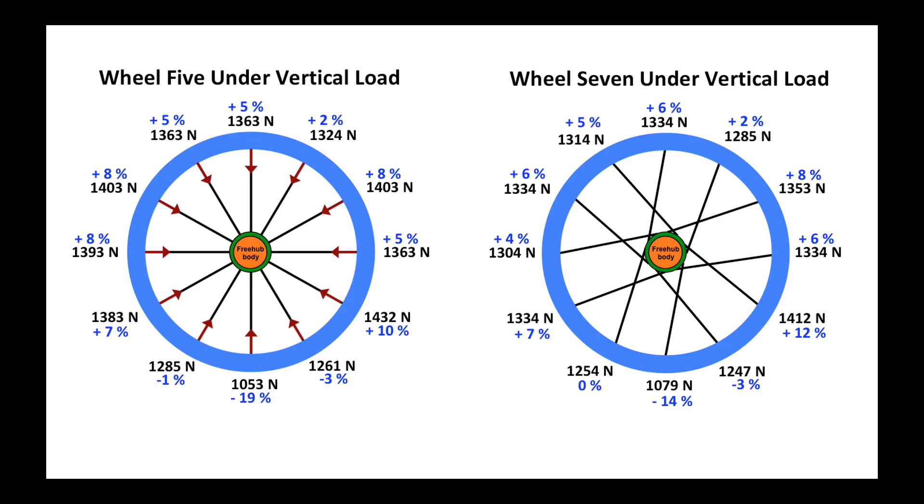Let's compare these two wheels. They are identical in terms of their components. The only difference being that the wheel on the left is radially laced, and the one on the right has a two cross. And we see a small reduction in the percentage loss of tension as spokes go through the bottom of the load bearing zone.